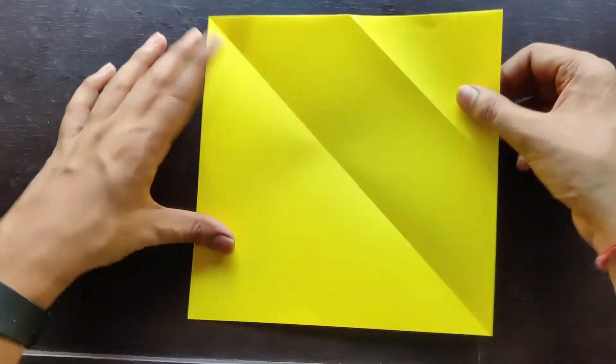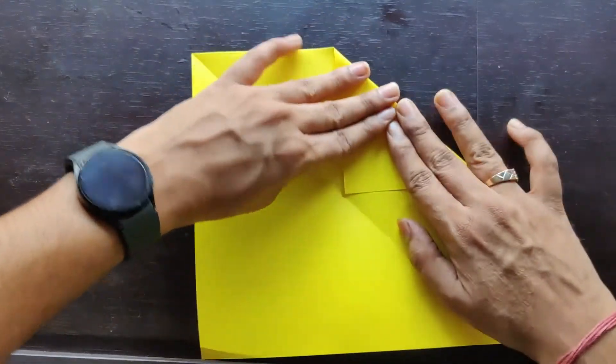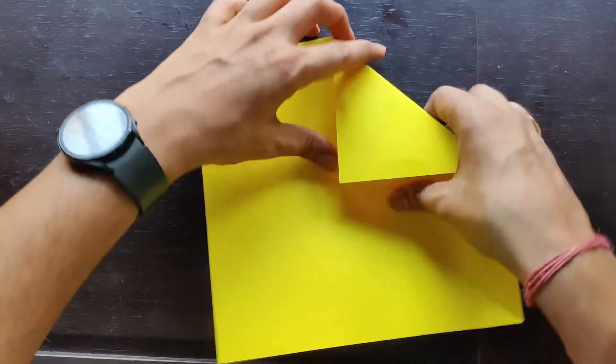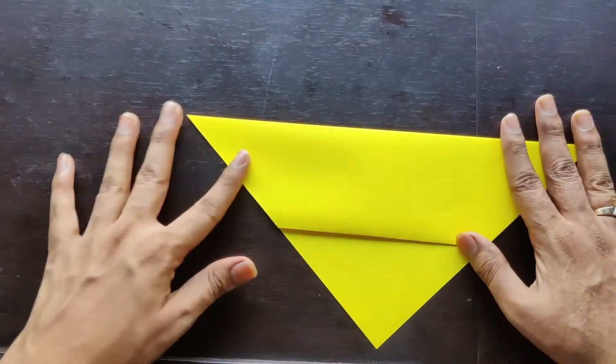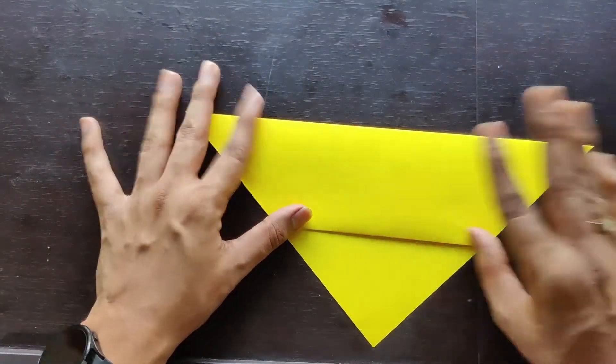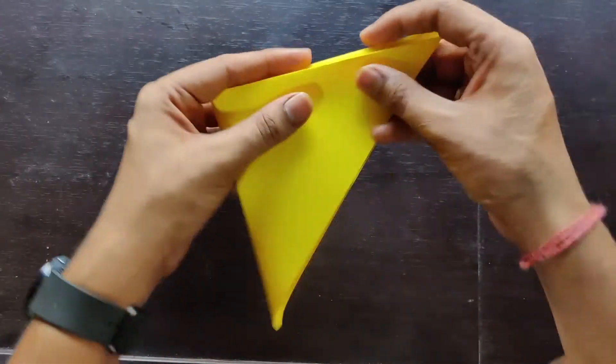This is how it looks. Now just open this side, fold it inwards like this, and then fold this back. Now fold it from the center along the vertical axis.